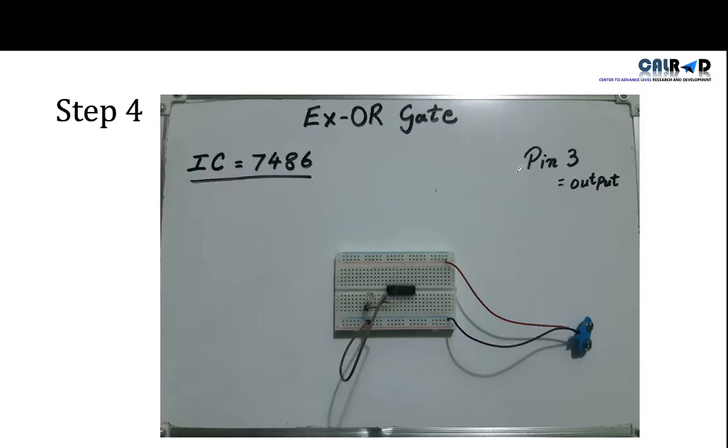Now the fourth step is pin 3 that is for our output, and this is pin 3. So we connect our resistor with pin 3. Resistor is connected with LED, LED is connected with this wire, and this wire is connected with the negative terminal.